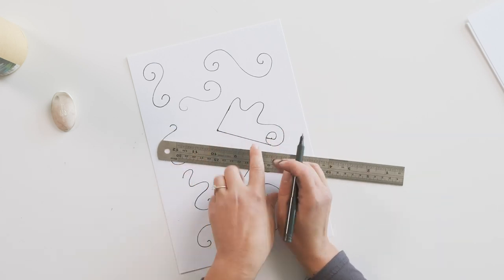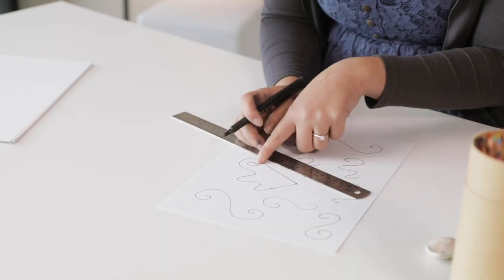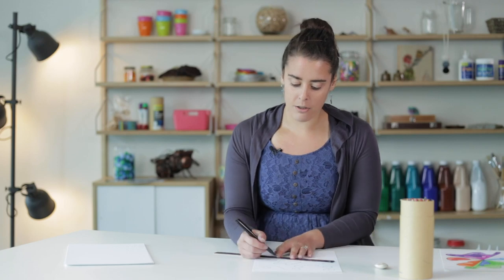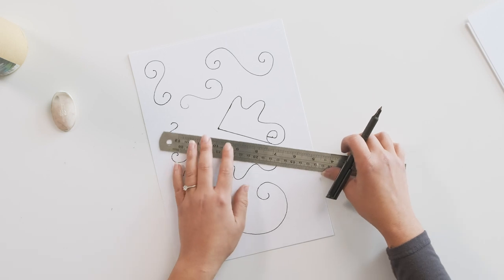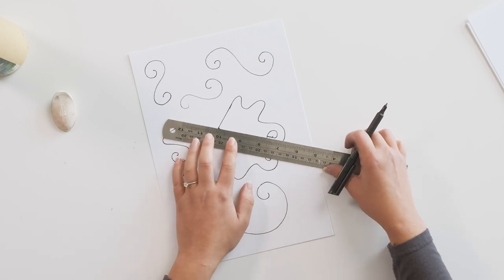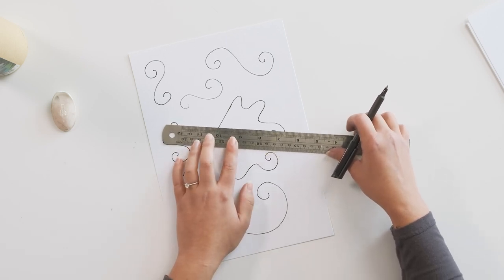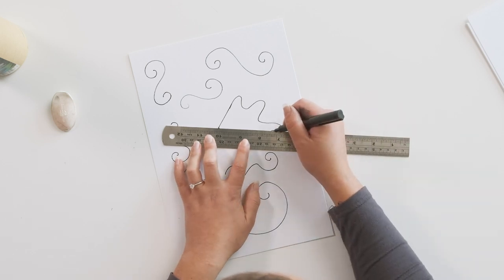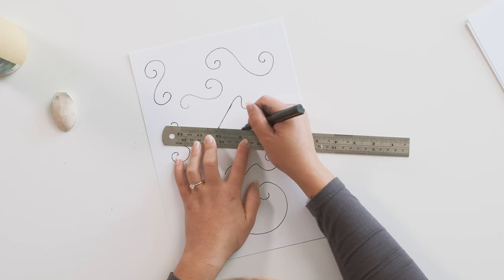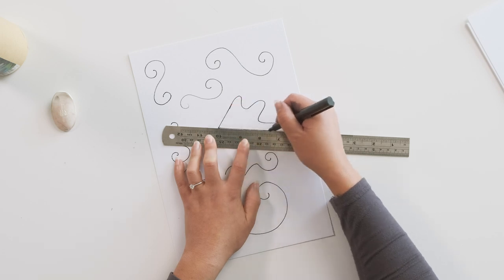The reason why we're not drawing all the way back to that point is because we've created that solid shape. We don't want this line going all the way through, otherwise this shape won't look solid anymore. Just one more edge that we need to find, which is just here on the outside of the swirl, joining in.